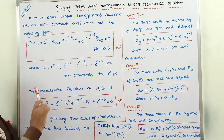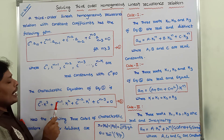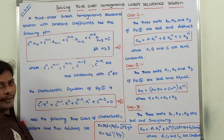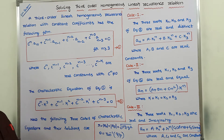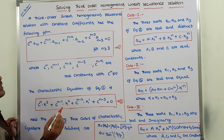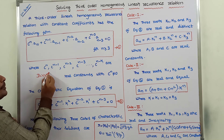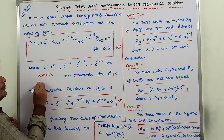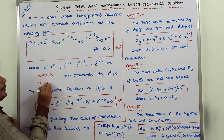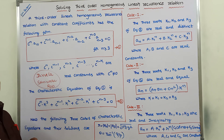So this is the general form of third order homogeneous linear recurrence relation and its characteristic equation, along with the three cases for finding the general solution. Thank you for watching this video. If you like this video, please share it with your friends and classmates and subscribe to the channel.